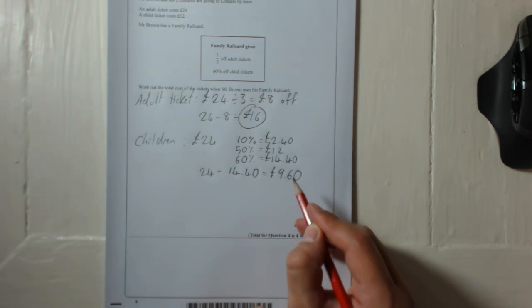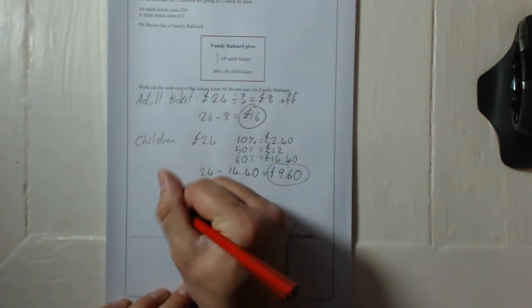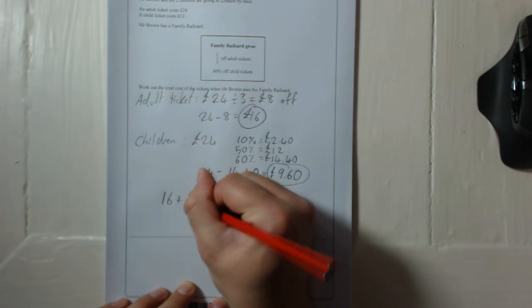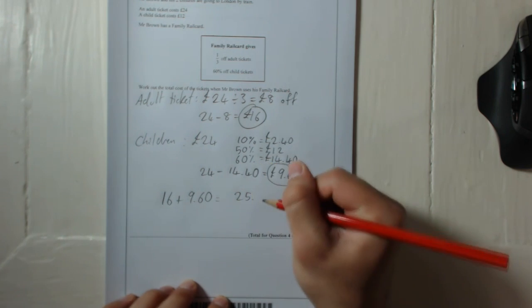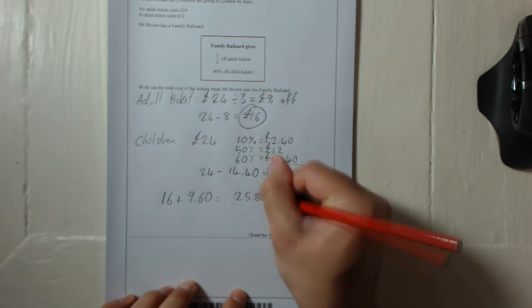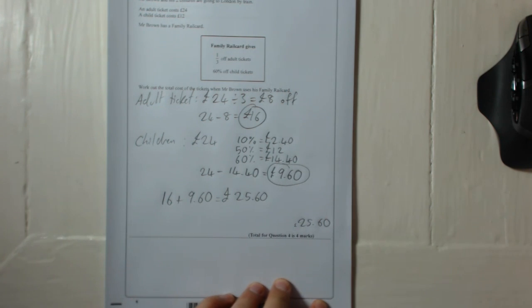That is what he's got to pay for his children. So we need to add that to the £16. £16 plus £9.60 equals £25.60. There we go.